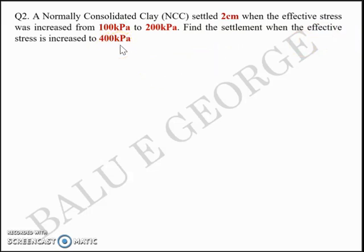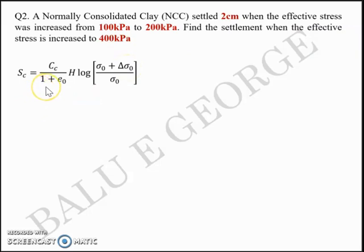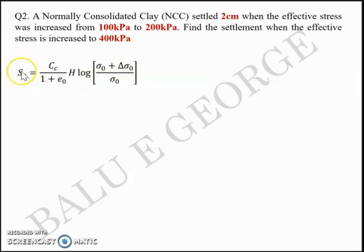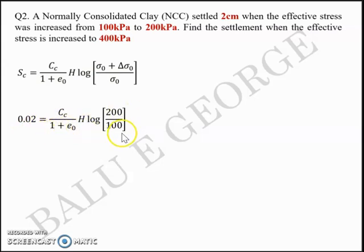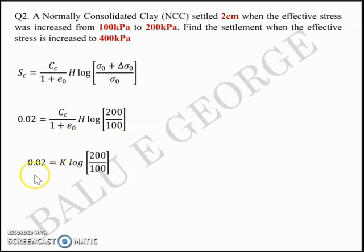We need to think about an equation connecting effective stress and settlement. Settlement equals (CC / (1 + E0)) × H × log((σ0 + Δσ0) / σ0), where σ0 is the original stress and σ0 + Δσ0 is the new stress. So 100 is the denominator and 200 is the numerator when SC equals 2 cm, giving 0.02 m = K × log(200/100), where K = CC / (1 + E0) × H is a constant.